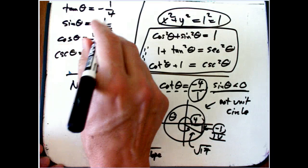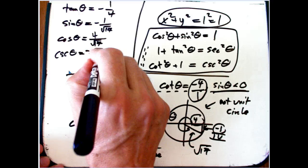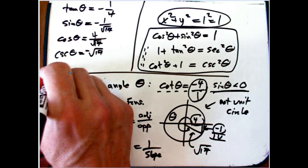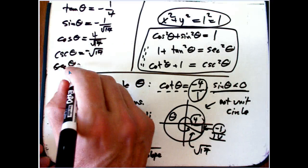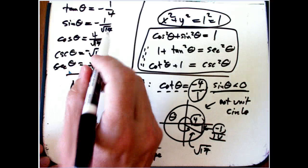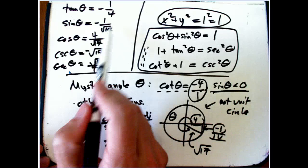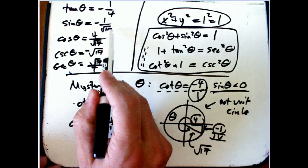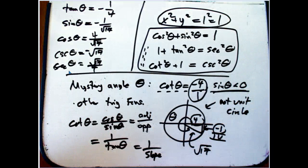Cosecant theta is just 1 over that. It's minus root 17. And secant theta is 1 over cosine or root 17 over 4. One thing I didn't bother to do is rationalize these denominators. And you should know how to do that, but I'm not going to worry about it. Okay.